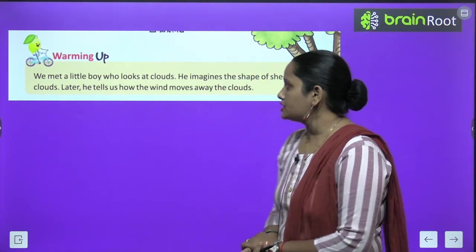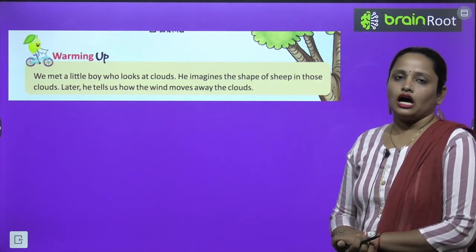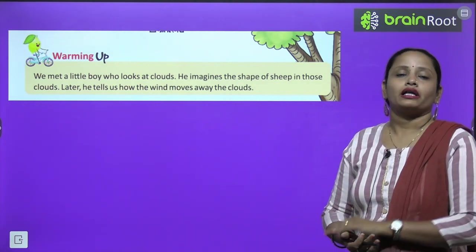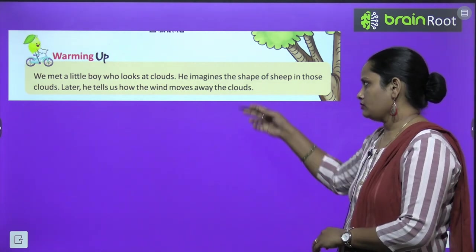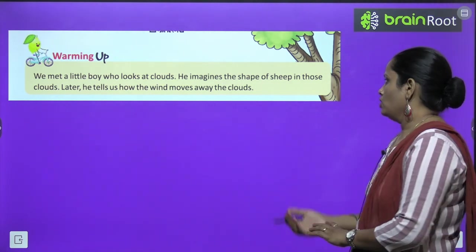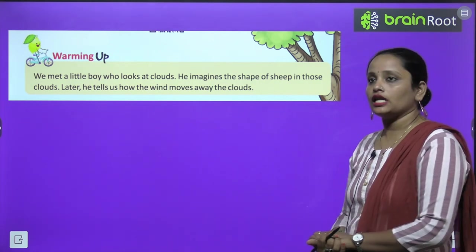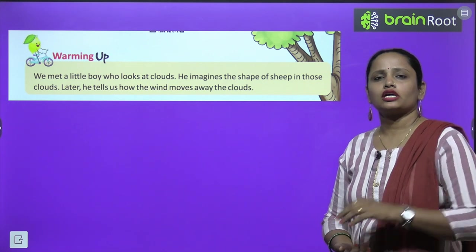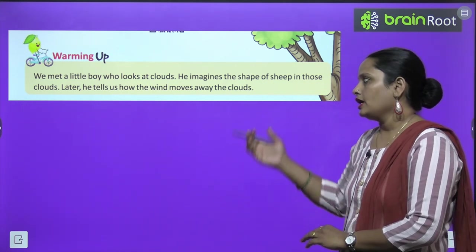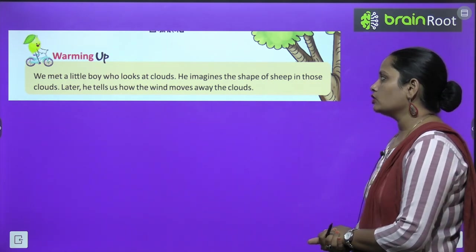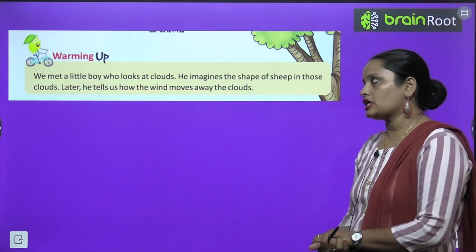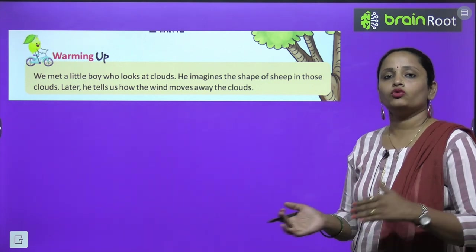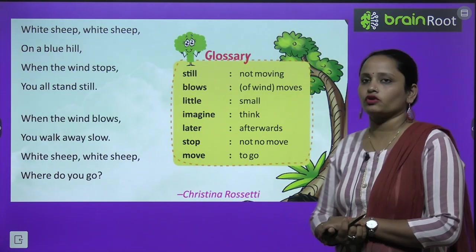We meet a little boy who looks at clouds and sees the shape of sheep in those clouds. What does he imagine? He sees the clouds and thinks that there are sheep. Later he tells us how the wind moves away the clouds.